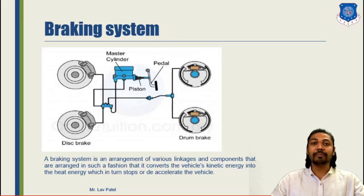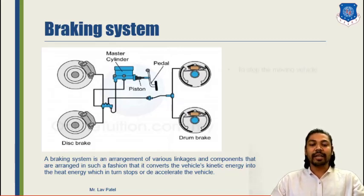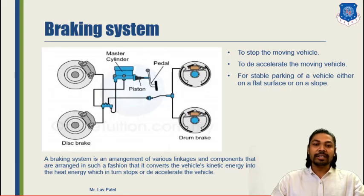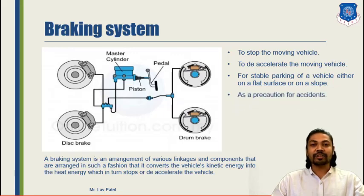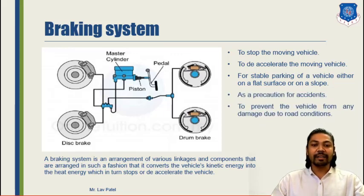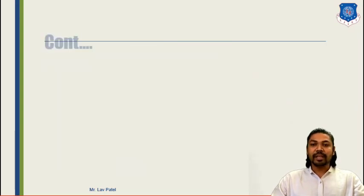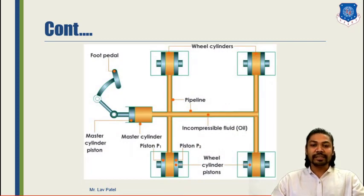By applying the brake, we generate friction, and due to that friction, heat is generated. That energy is used to stop or decelerate the vehicle. Basically, the requirement of the braking system is to stop the moving vehicle or special purpose vehicle, to decelerate or lower the speed, for stable parking either on a flat surface or on a slope, as a precaution for accidents, and to prevent the vehicle from damage due to road conditions.